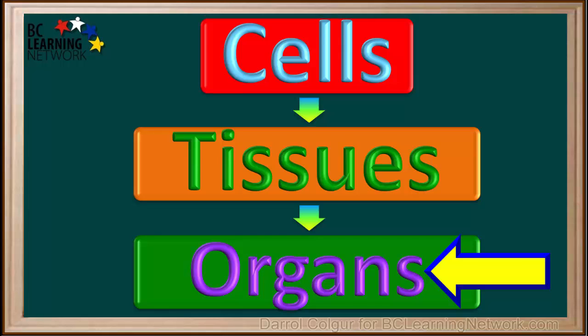Different types of tissues combine to form organs. Each organ performs a specific job in the body, such as pumping blood or filtering urine.